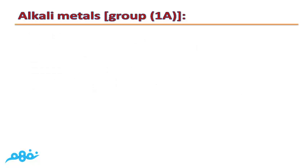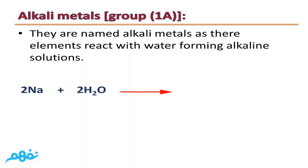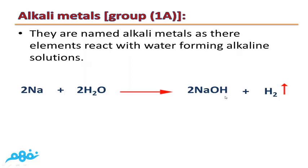Let's start with Group 1A, or alkali metals. They are named alkali metals because their elements react with water forming alkaline solutions. For example, two atoms of sodium plus two molecules of water form two molecules of sodium hydroxide and hydrogen gas evolves. Sodium hydroxide is an alkaline solution which changes the color of litmus solution into blue.